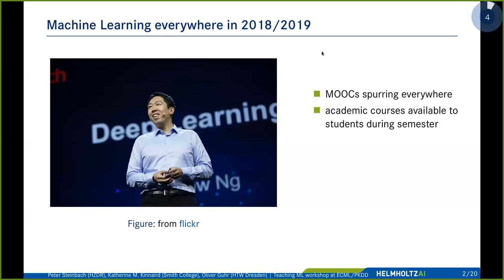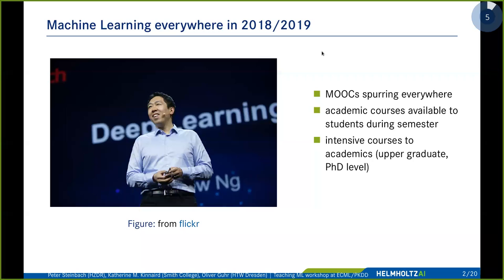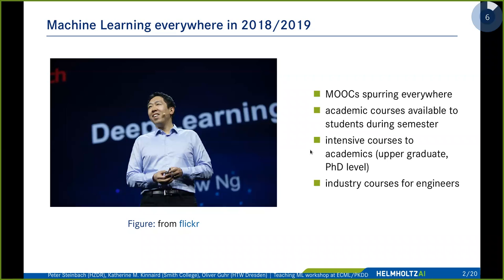At the same time there were tons of academic courses available — not only in computer science departments but also in domains like physics, biology, and chemistry. There were also outside-university institutions like the Helmholtz center, where we invest in training PhD students and postdocs through intensive courses. And of course there are quite a few training opportunities with industry as well.